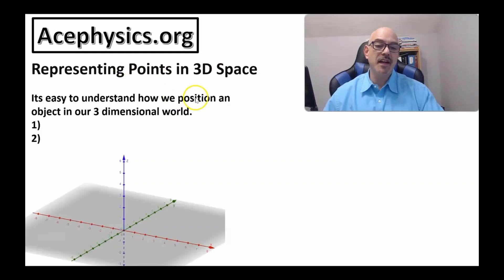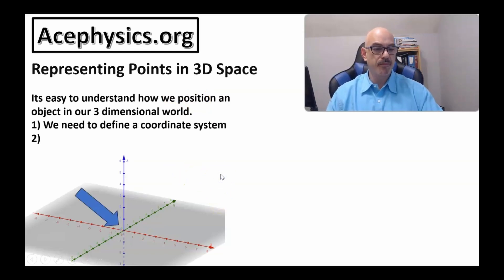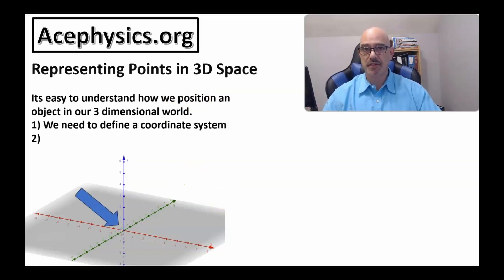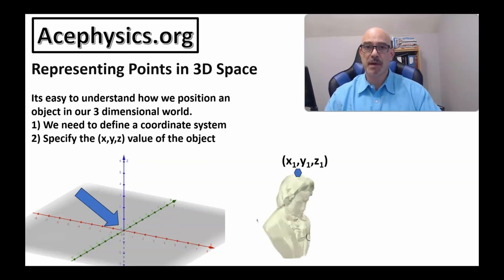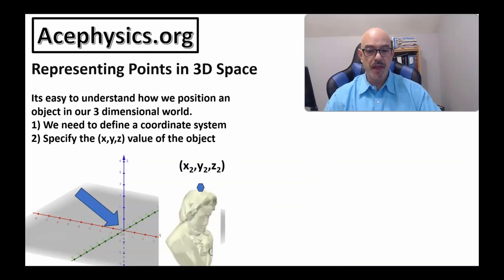It's easy to understand how we position an object in our three-dimensional world. The first thing we do is define a coordinate system — it's always the first thing you do in any physics problem. After that, you can specify the location of something. For example, here's a statue at location x1, y1, z1 relative to the specified coordinate system. If I move the statue, it's now at a new location x2, y2, z2.